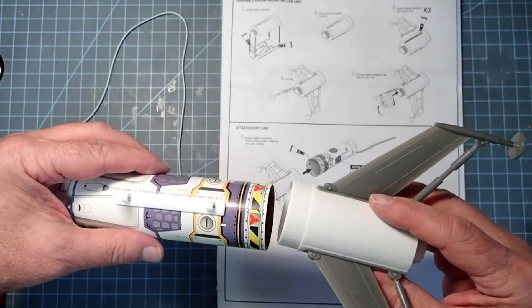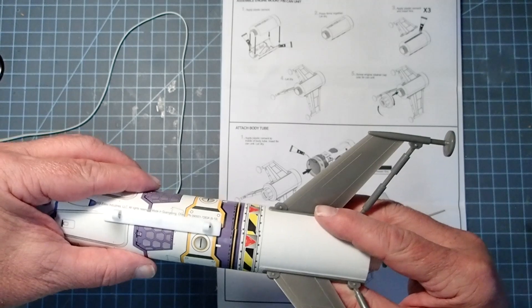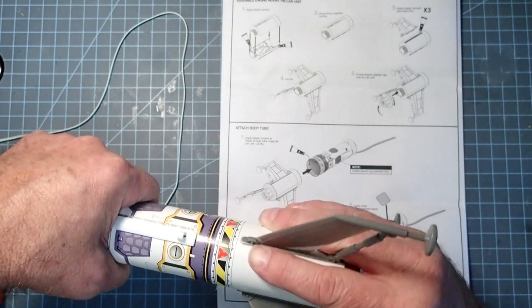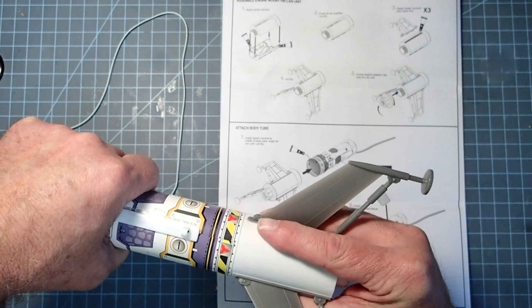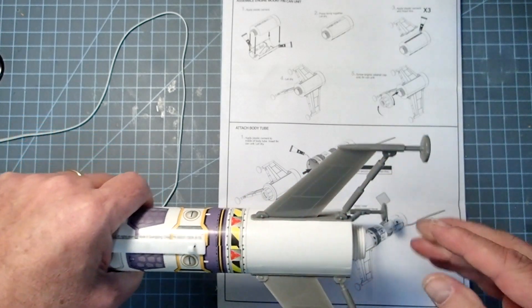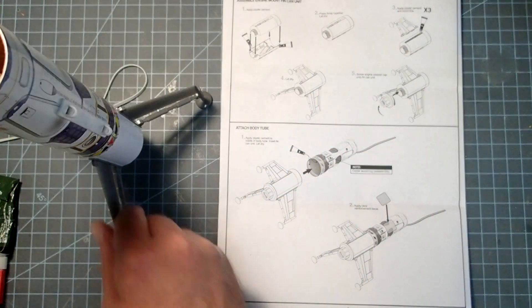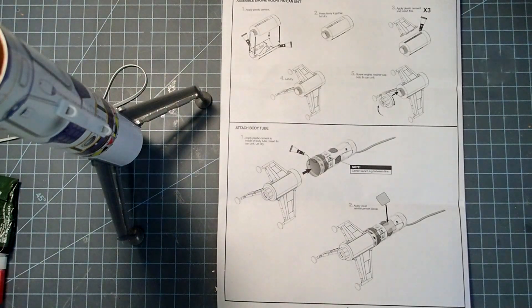And then we're going to go ahead and insert the fin can once more. Now again, I'm going to find my launch lug and make sure it's in the right position. Once it's in there, just kind of move it back and forth a little bit to get a good glue contact. Then we can just stand that up for now.